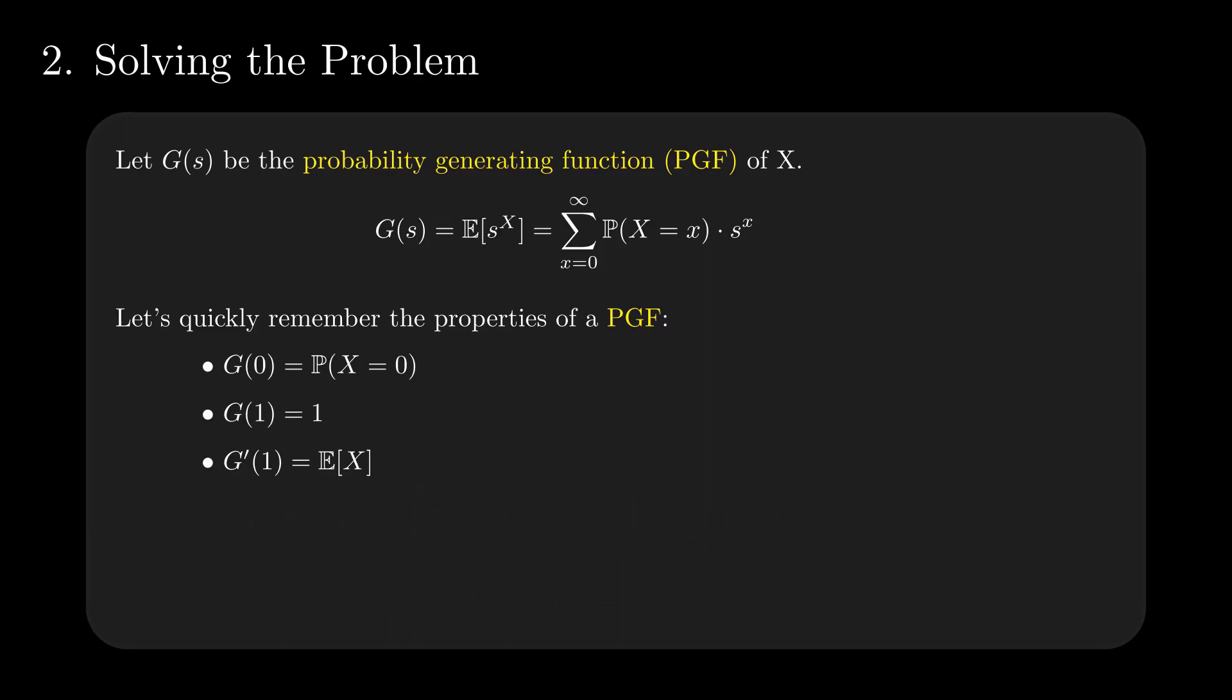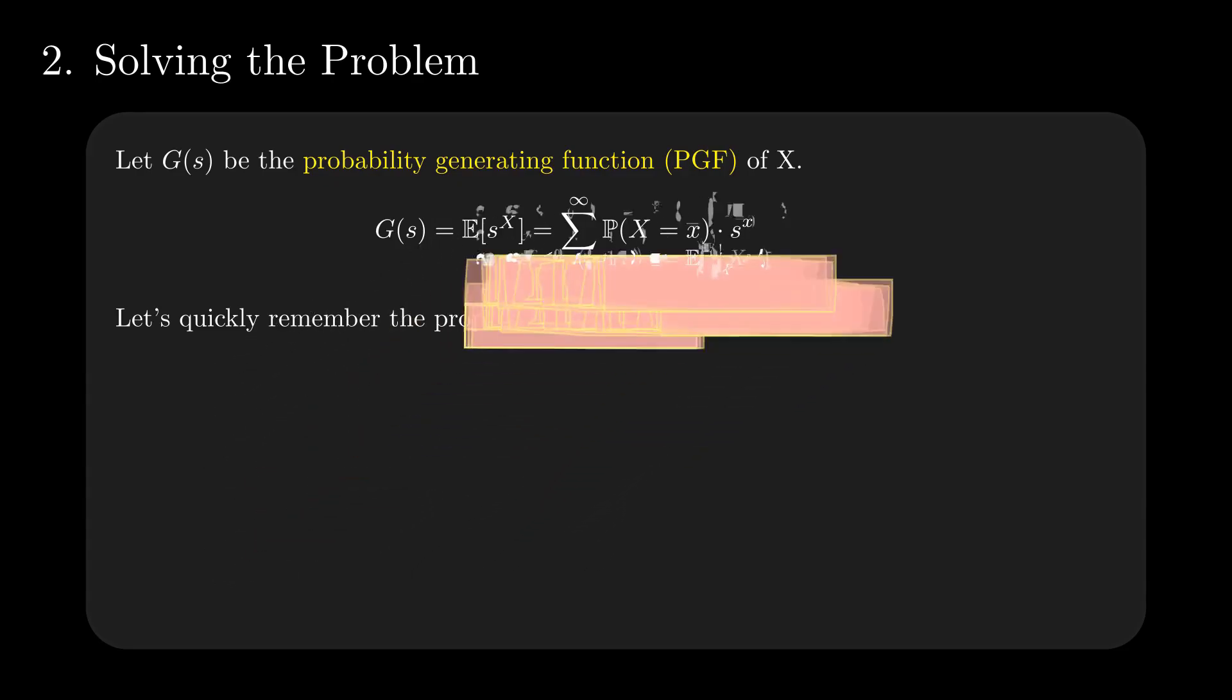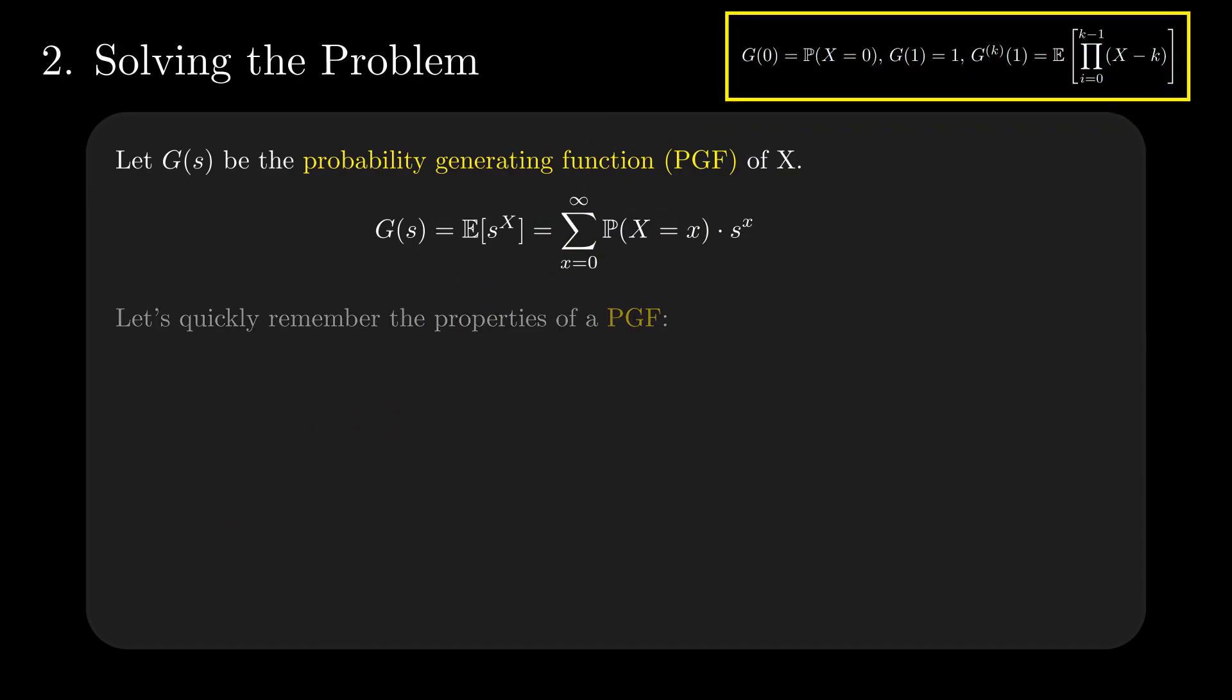More complex proofs generate similar results for second, third, and higher degrees derivatives. The expectation of the products such as X times X minus 1 times X minus 2 and so on is called the factorial moment. And it is a good starting place for further reading for those interested.